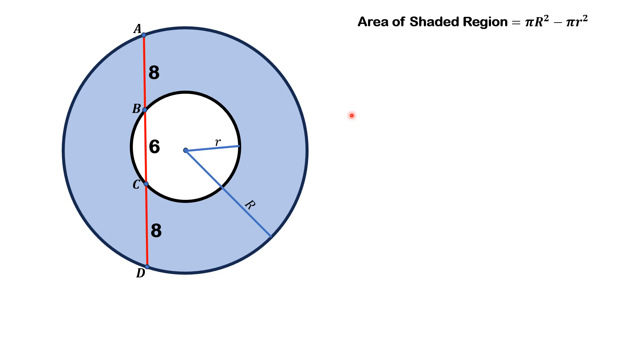So, we can write it as π capital R squared minus π times small r squared. Taking π common, we have π times capital R squared minus small r squared.